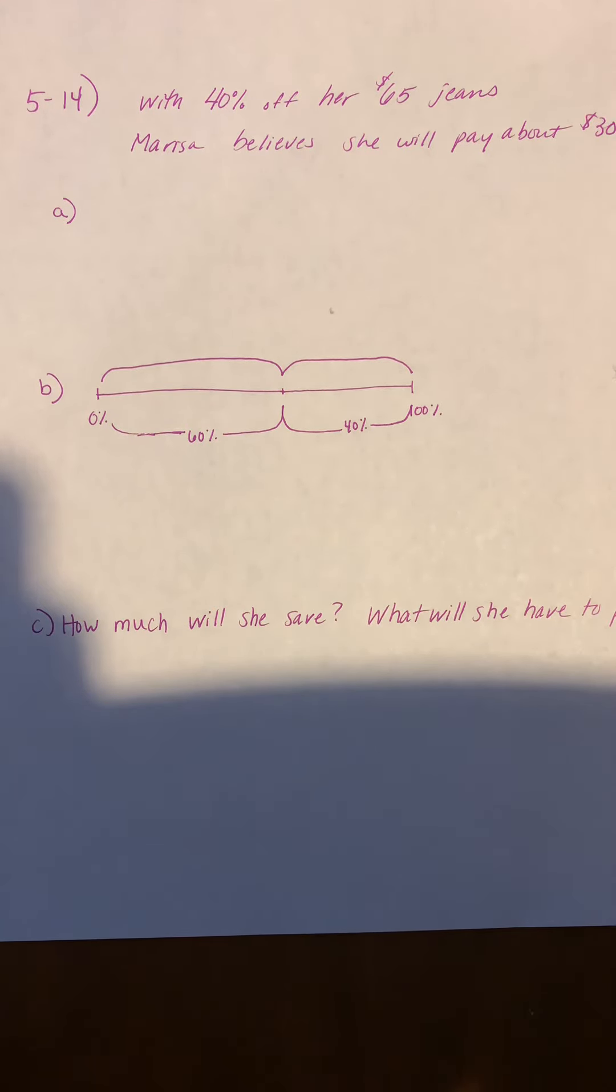Okay, question 14 in chapter 5. We're first talking about Marissa. She's always looking for a great deal while shopping. She found a sale rack where all of the jeans are marked 40% off, and her favorite jeans regularly cost $65.